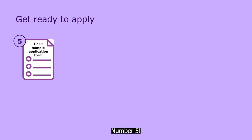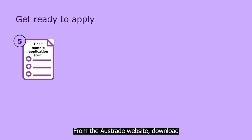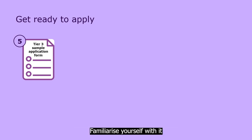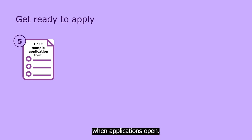Number five, from the Austrade website, download the Tier 3 sample application form. Familiarise yourself with it so that you can fill out the online form quickly and easily when applications open.